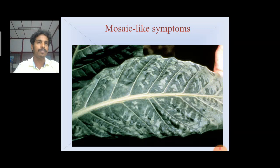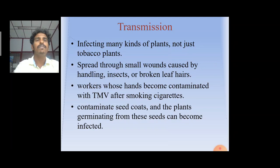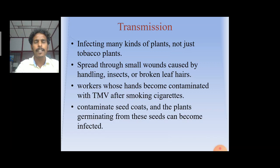Transmission — how is it transmitted from one plant to another? It infects many kinds of plants, not just tobacco plants. First, it spreads through small wounds caused by handling, insects, or broken leaf hairs. Workers who had become contaminated with TMV after smoking cigarettes can spread the virus. Contaminated seed coats can also cause plants germinated from these seeds to become infected.